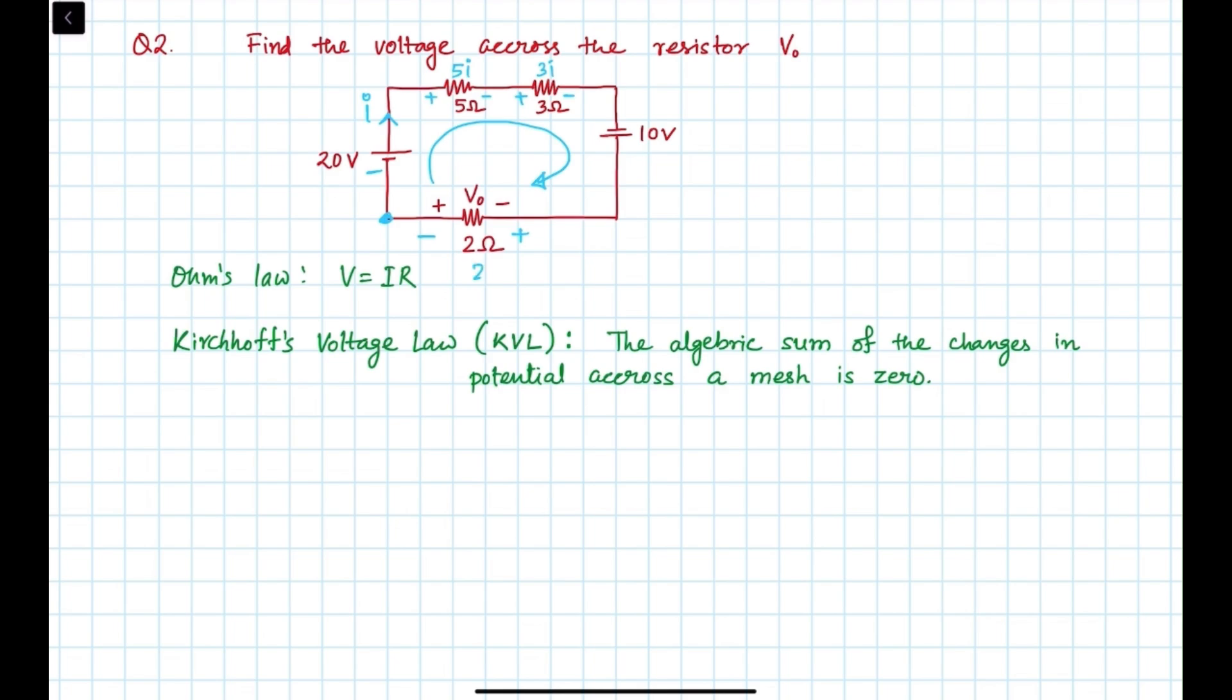So now let's start from this point. We are entering the negative side of the 20 volt, so we take minus 20. Then we will get 5I, then plus 3I. For the 10 volt we are entering in the minus side, so we will take minus 10 and plus 2I.